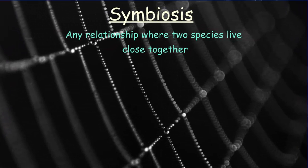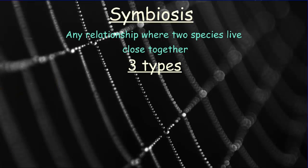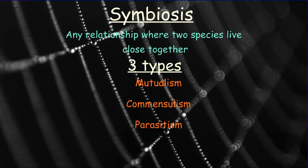Our last interaction is called symbiosis. Symbiosis is any relationship where two species live closely together — and you'll see from the pictures just how closely that can mean. There are three main types of symbiosis we'll look at: mutualism, commensalism, and parasitism.